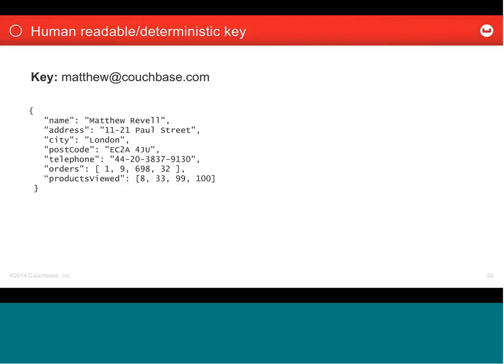There are a couple of things we can do. We could create an entirely new document keyed by the new email address and then destroy the old one. But that feels a bit messy — it could leave orphaned documents if the delete didn't happen correctly in the application layer. Or we could do a lookup document where matthew@couchbase.com simply points over to the new user profile document. But both approaches may feel a bit messy.